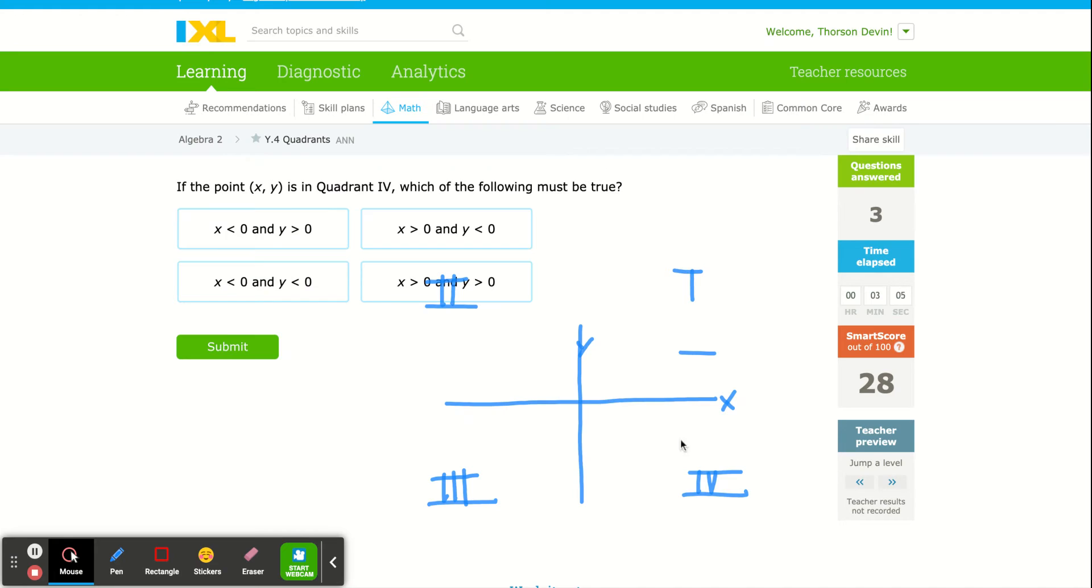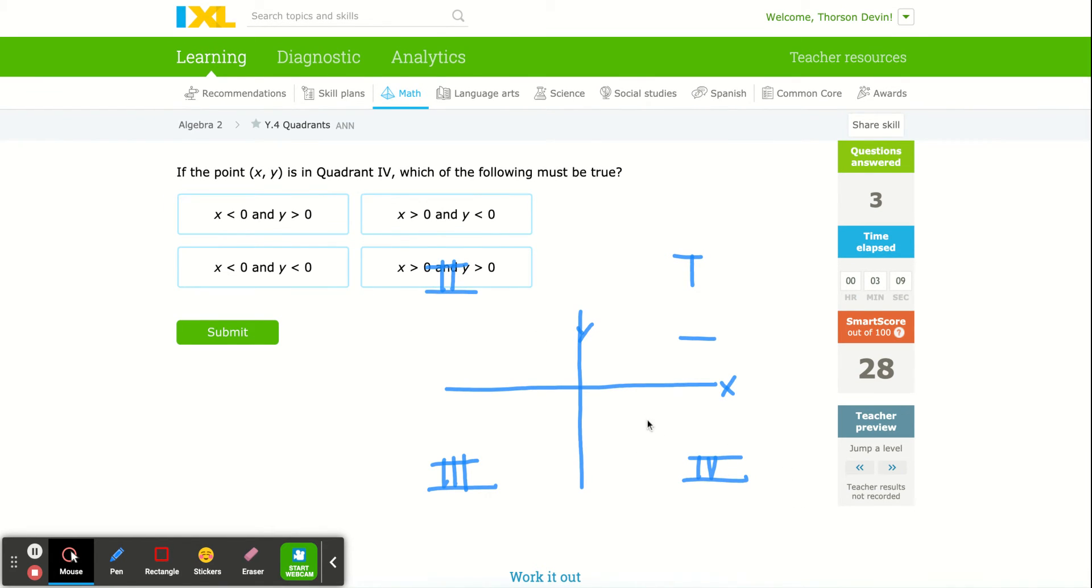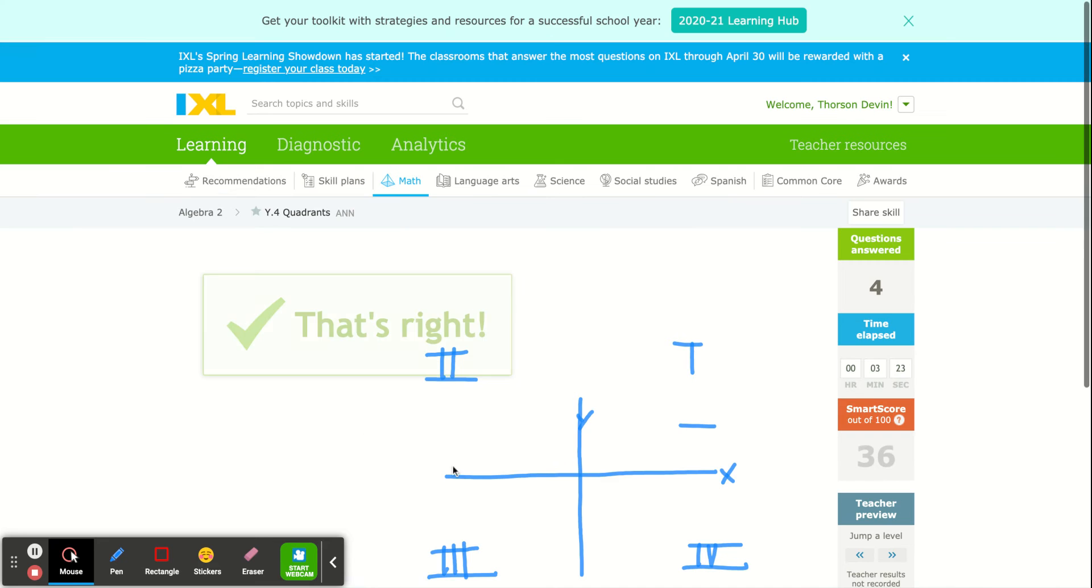If the point X, Y is in quadrant four, which of the following must be true? Well, if we're in quadrant four, X must be positive. Y must be negative. Looking at the options: X must be positive, that's not positive. That is. And Y must be negative. So it's this one.